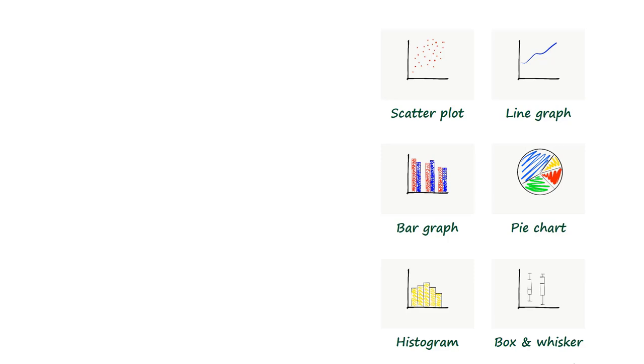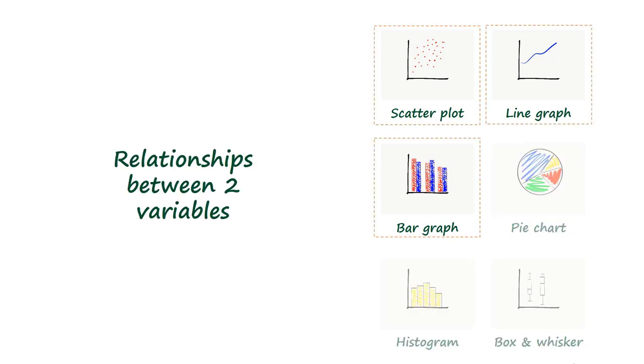If you're looking for a short video on how to make a graph, please click the link below. Scatter plots, line graphs and bar graphs can all be used to illustrate relationships between two variables. This is a scatter plot.